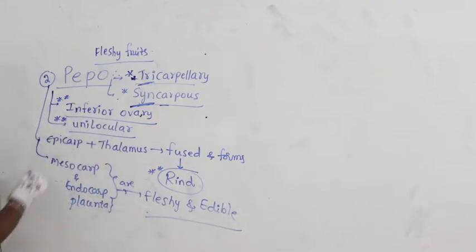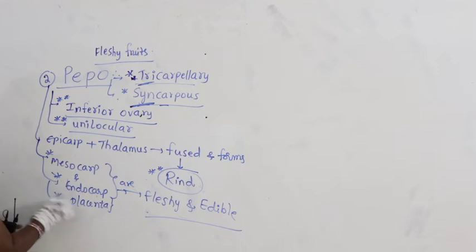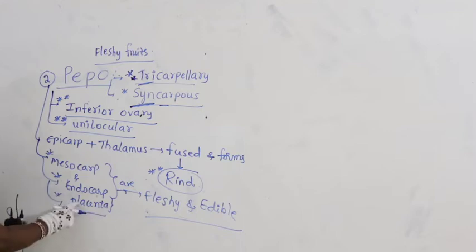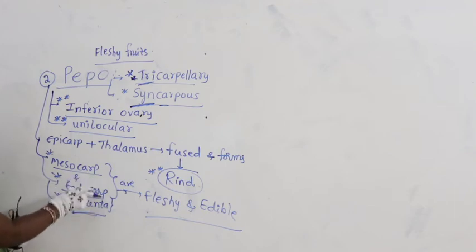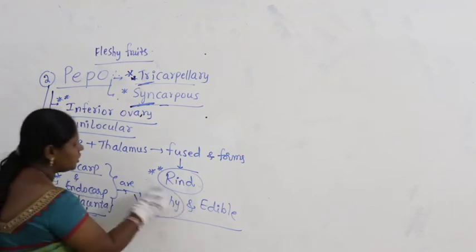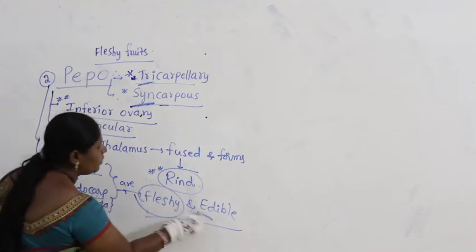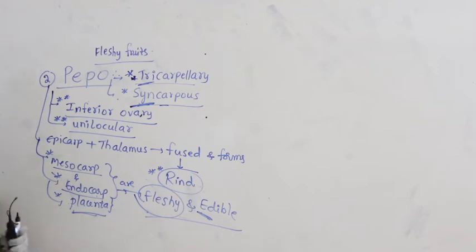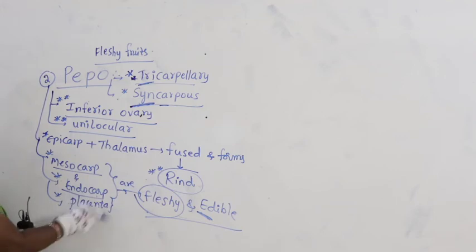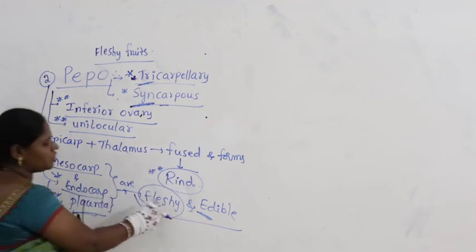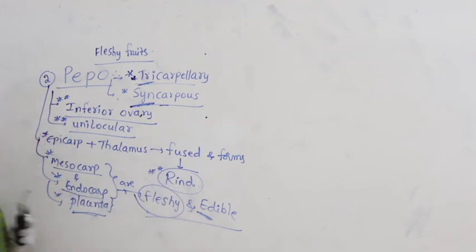So, what are all edible here? Mesocarp, endocarp, and placenta — on which ovules are attached — these three become fleshy and they are edible. Epicarp and thalamus are fused to form the rind, while mesocarp, endocarp, and placenta become fleshy and edible.